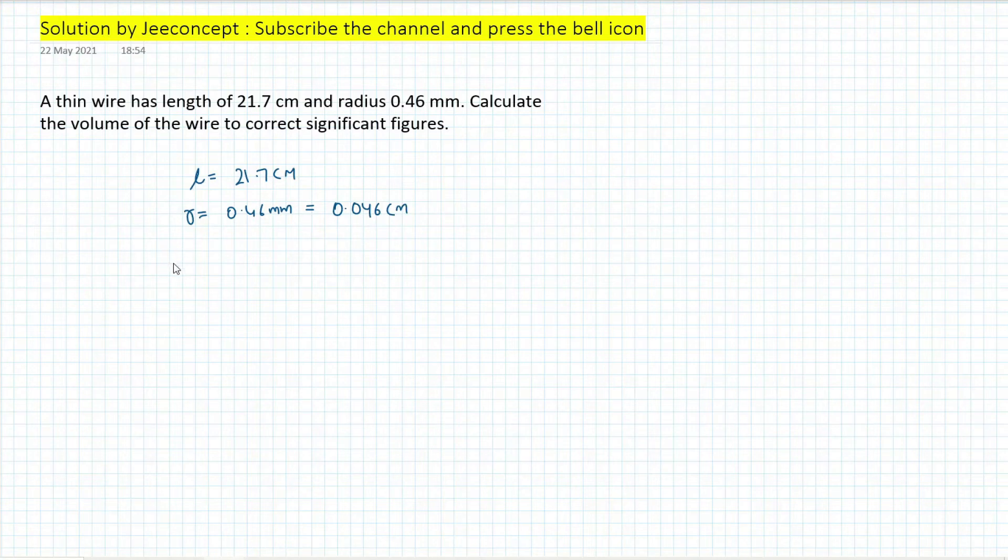Now the volume of this wire is treated as a volume of a cylinder. So this will become V is equal to pi R square into H.